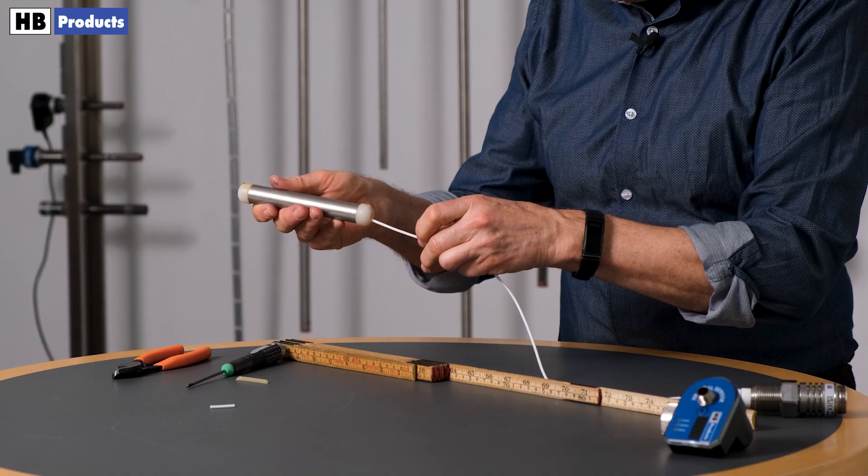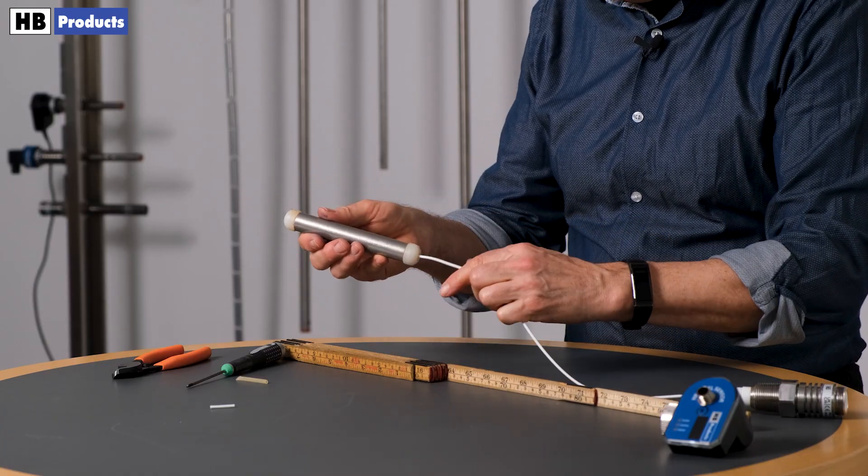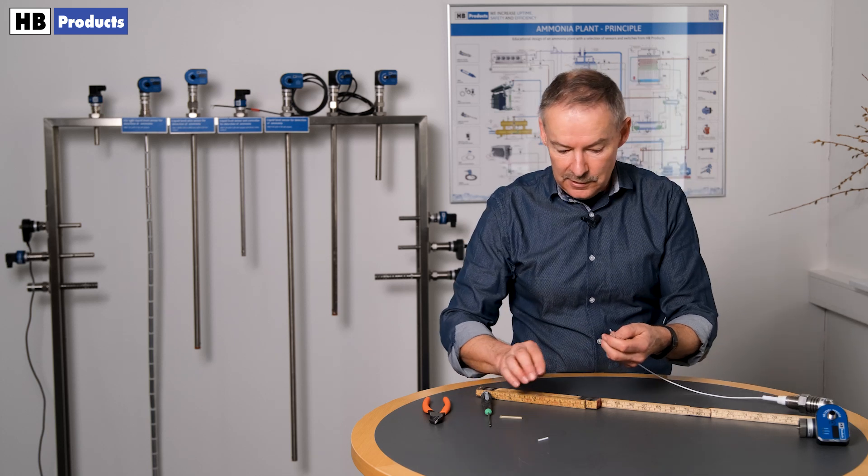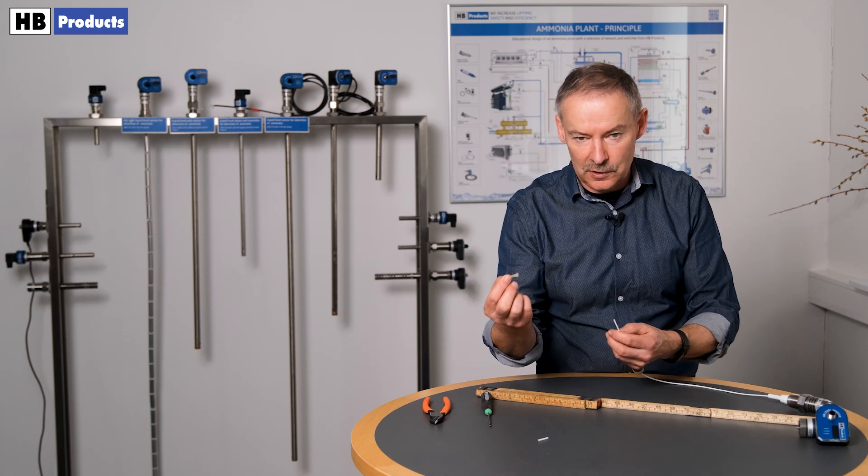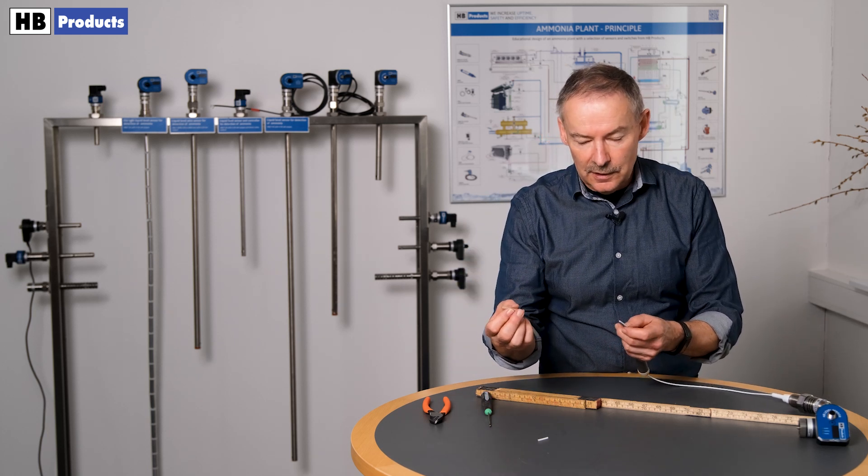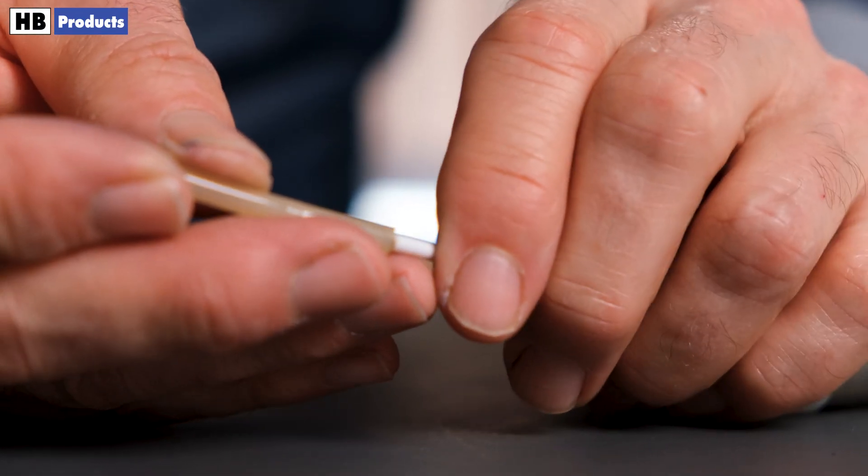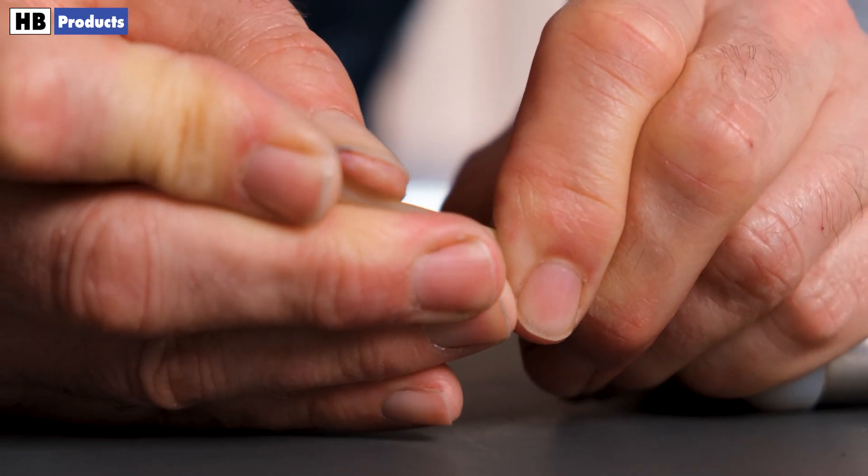You pass the wire through the counterweight, and if you're going to use the sensor in water, you need to put one of these wire end caps on top here. It's just put on like this, and then you put the wire in here.